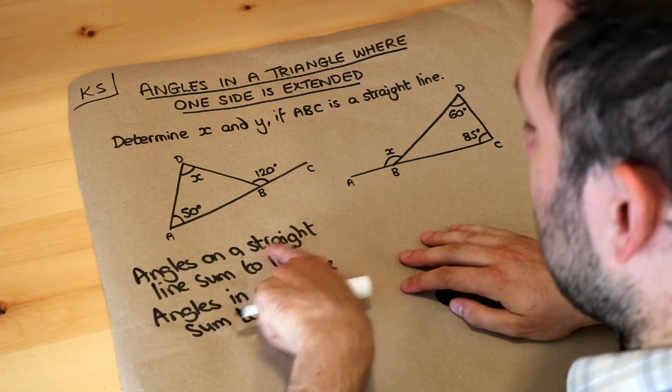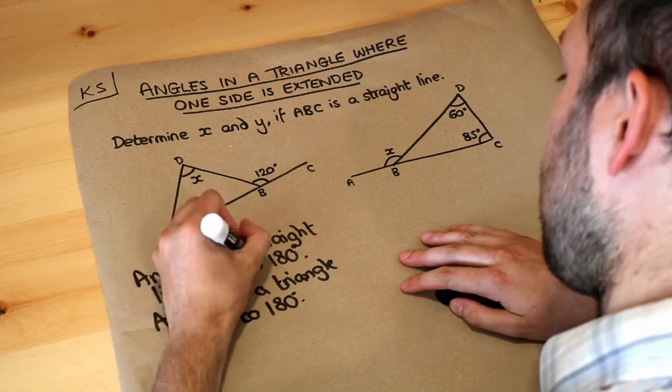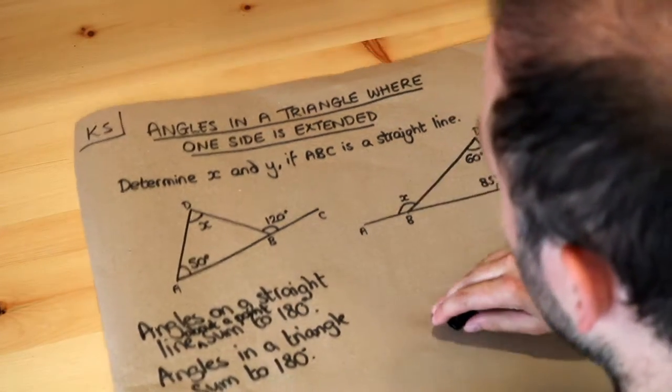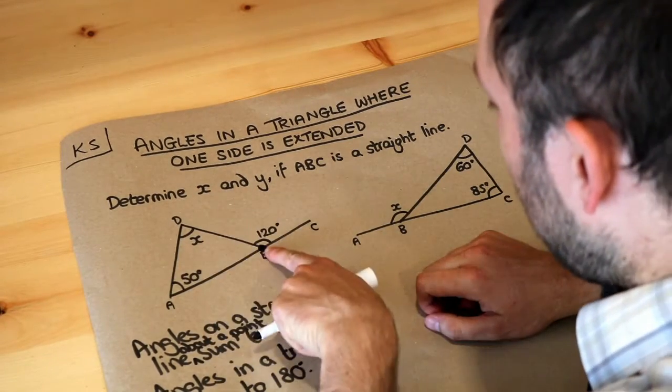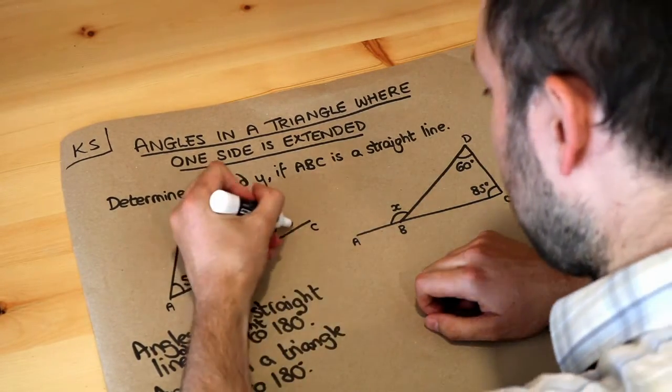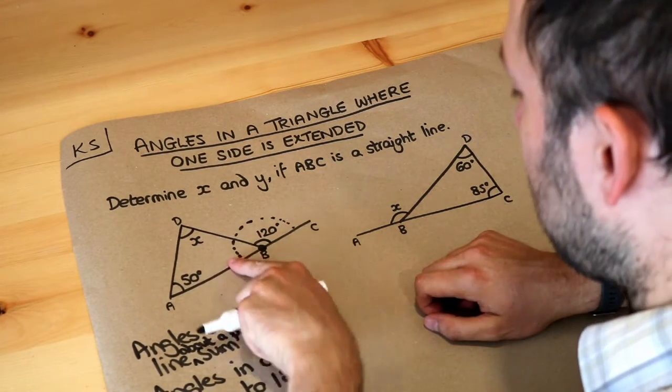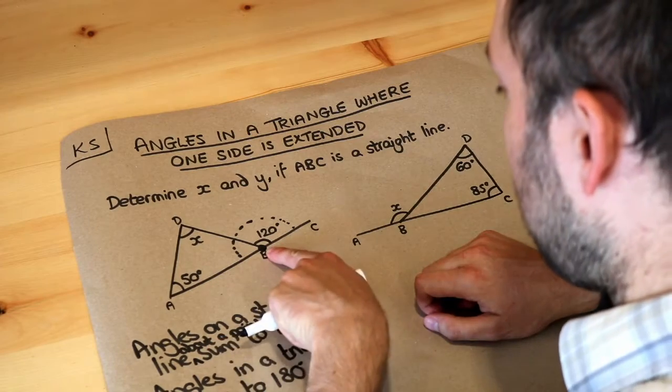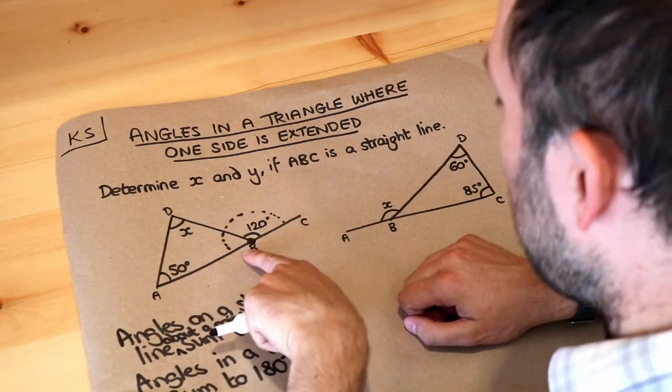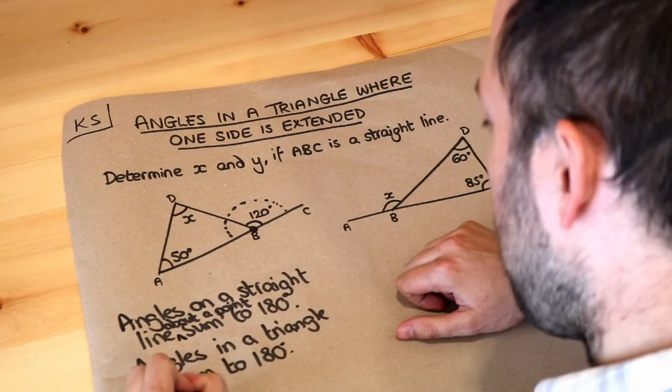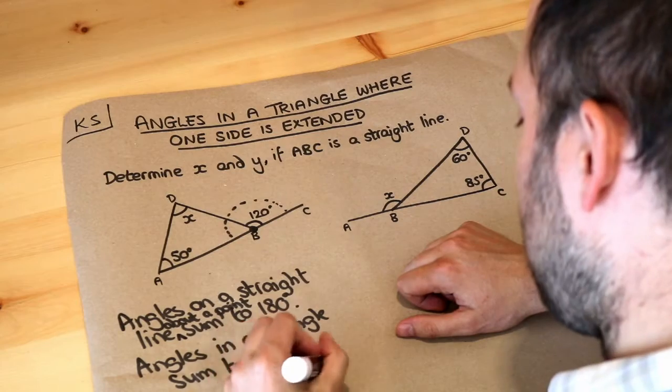I should really say that angles on a straight line about a point sum to 180. Let's first look at this point here and we know that angles around a straight line, this total angle on the straight line about point B. If that total angle is 180 degrees then we just need to do 180 minus 120 to find the remaining angle in this line which is 60 degrees.